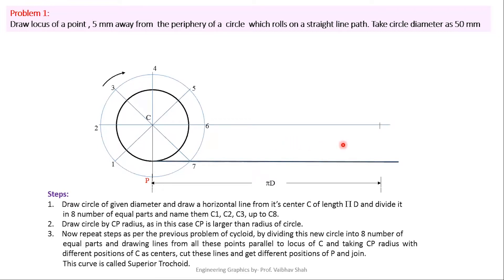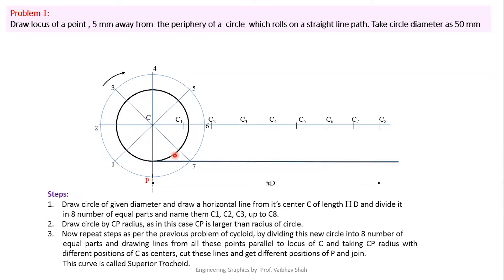We divide the center line into eight equal parts: 1, 2, 3, 4, 5, 6, 7, and 8. After dividing, we give numbering C1, C2, C3, C4, C5, C6, C7, and C8. After that we draw lines parallel to the center line from the points on the generating circle — from point P, from points 1 and 7, from points 2 and 6, from points 3 and 5, and from point 4. All these lines must be parallel to the center line.